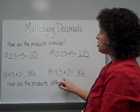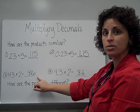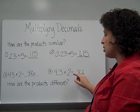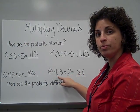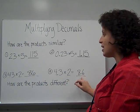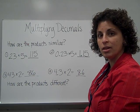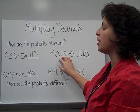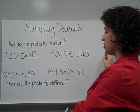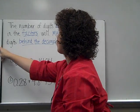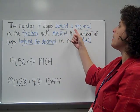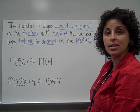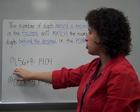So, when we multiply numbers, it's always going to give us the same digits. But if there's a decimal in the problem, there's going to have to be a decimal in the answer. We can also learn where the decimal goes by looking at the factors. The number of digits behind a decimal in the factors will match the number of digits behind the decimal in the product.